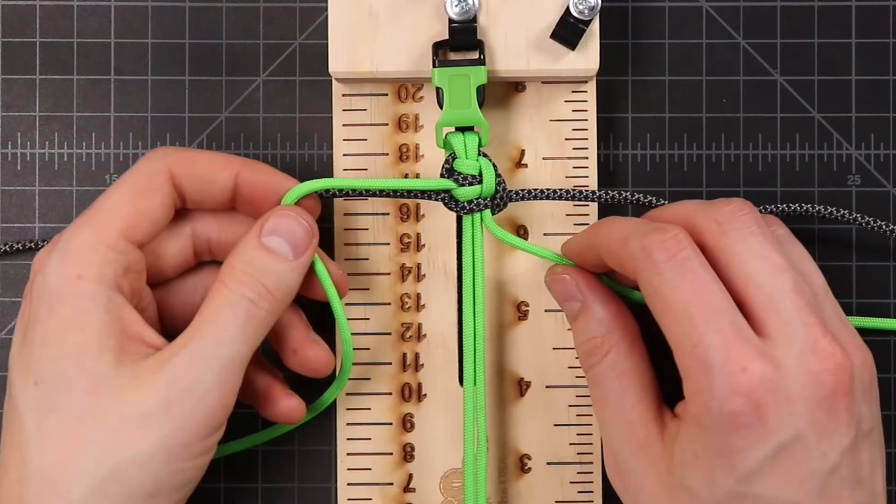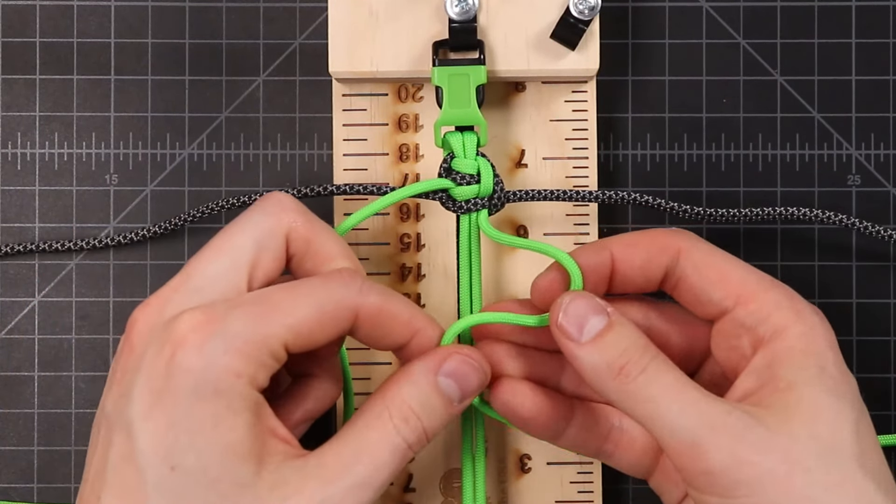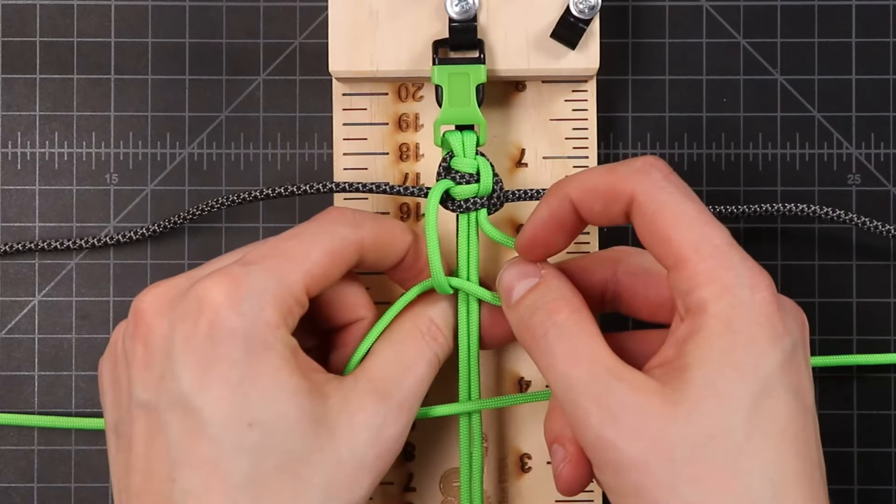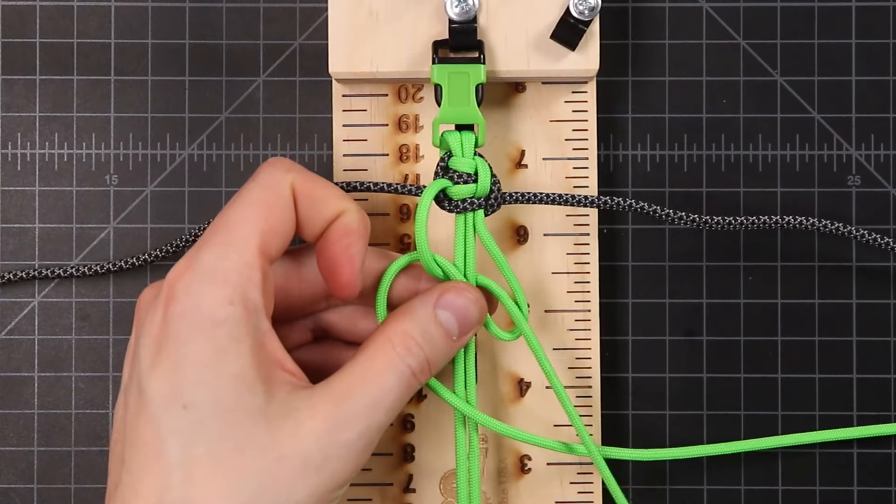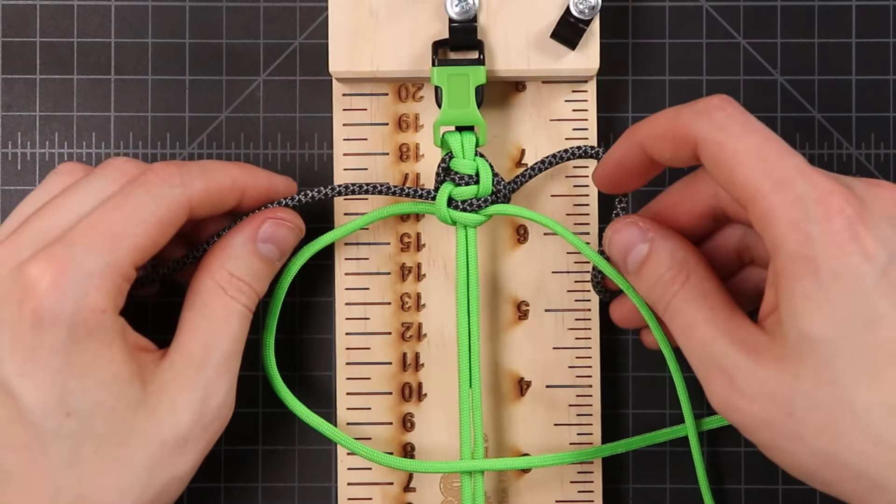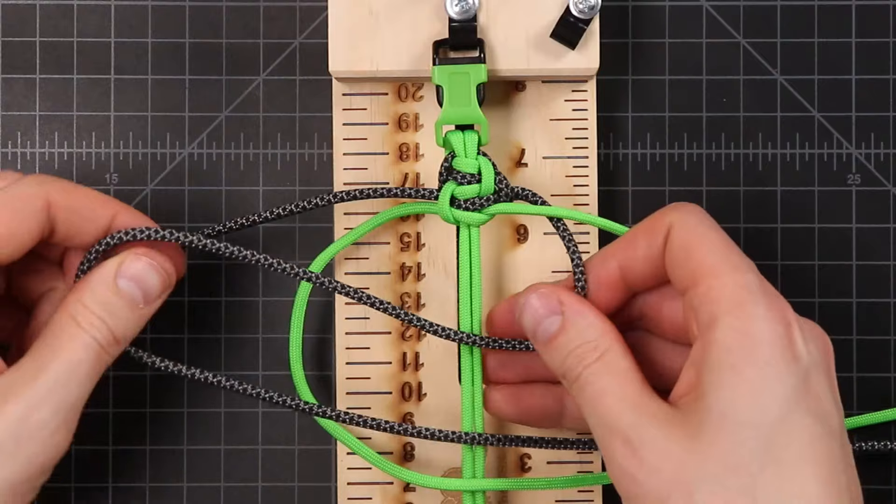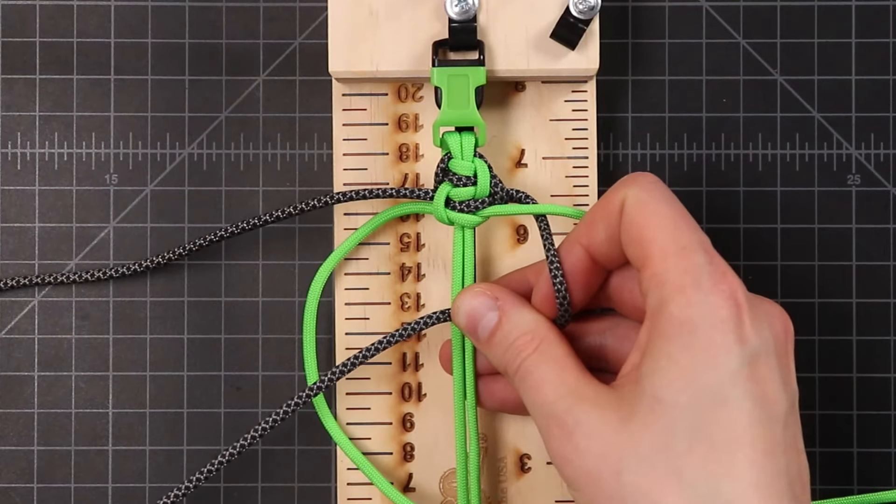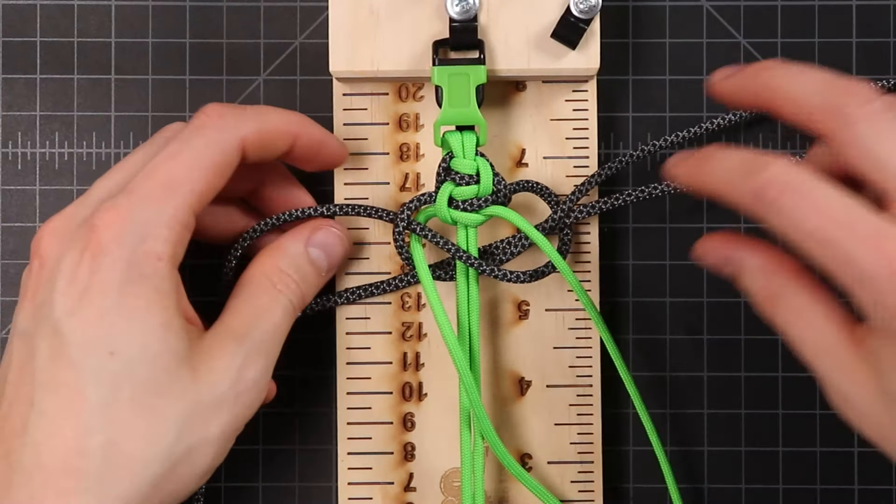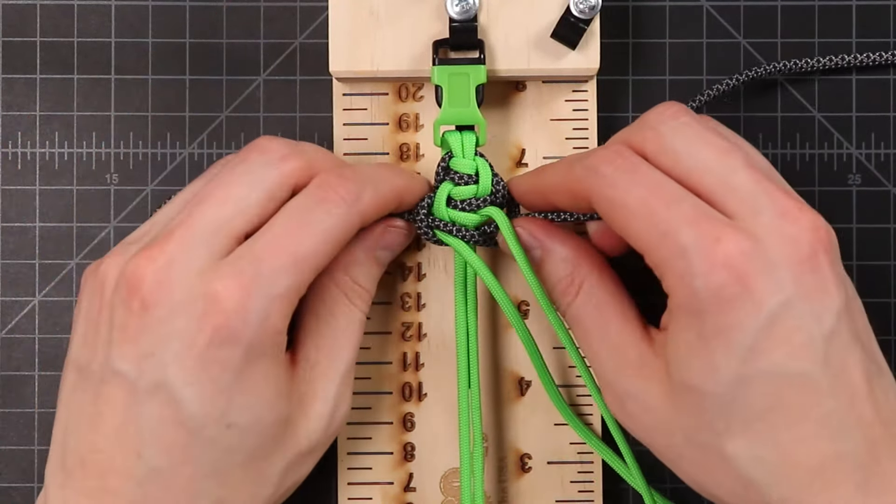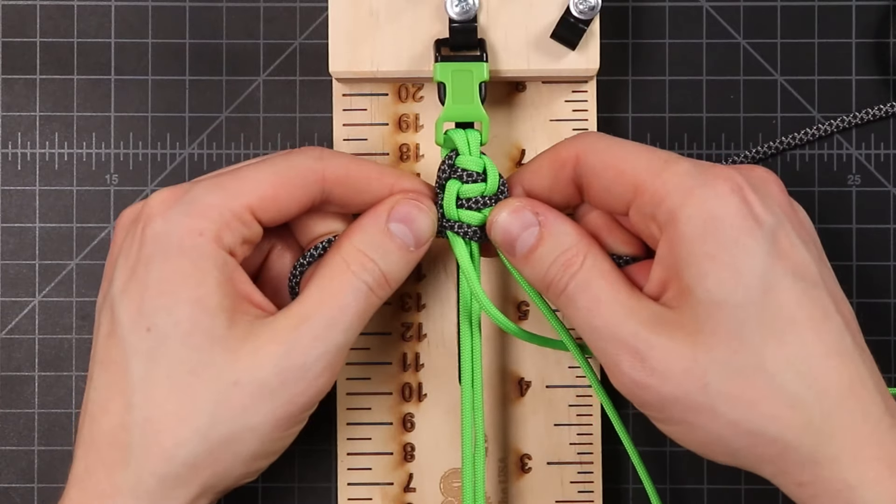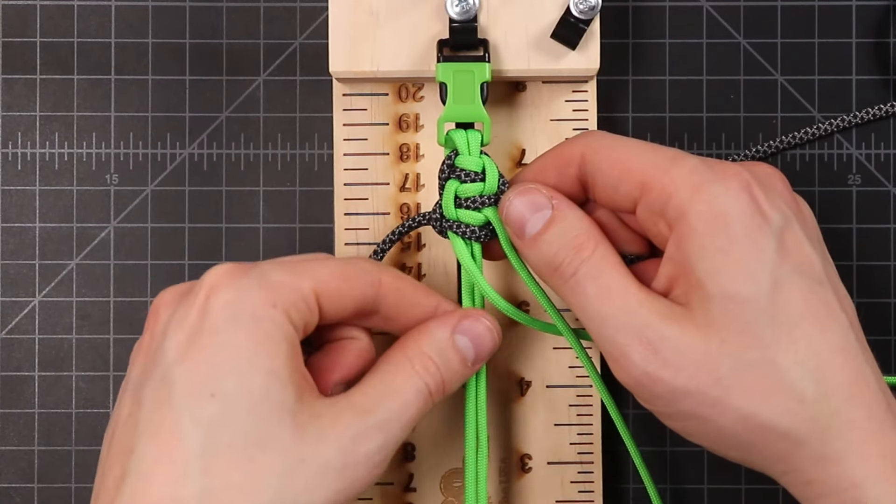We'll do one more knot, again, changing sides again. So we're going back to right to left over the top, like that. Put it right to left with black. And one more instance of our pattern is complete. So now that you know the pattern, we'll just keep on repeating that down the length of the bracelet.